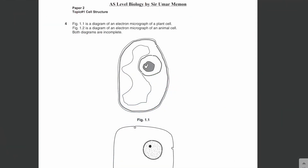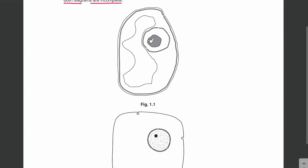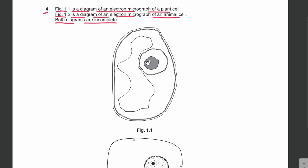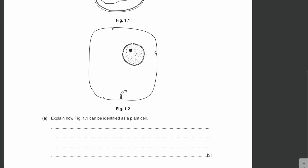Assalamu alaikum everyone. In this video lecture we will be discussing the Paper 2 topical past papers of the topic cell structure from the AS Level Biology 9700. Let's start question number 4. Figure 1.1 is a diagram of an electron micrograph of a plant cell, and figure 1.2 is a diagram of an electron micrograph of an animal cell. An electron micrograph is simply a picture taken from the electron microscope. Both diagrams are incomplete. Part A: explain how figure 1.1 can be identified as a plant cell.